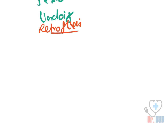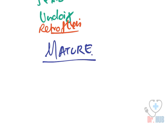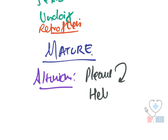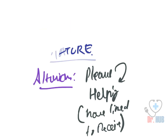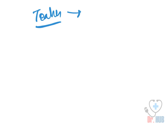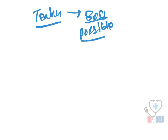Under mature defenses, first we see altruism. Altruism is getting pleasure from giving to others — helping others or giving them what you would have liked to receive yourself. An example is a teacher teaching students in the best possible way, which the teacher never received. This is altruism.